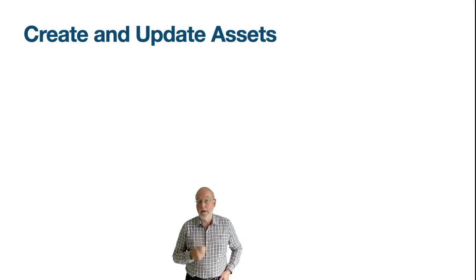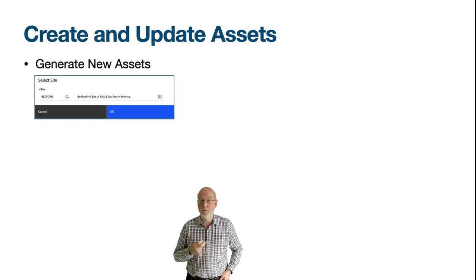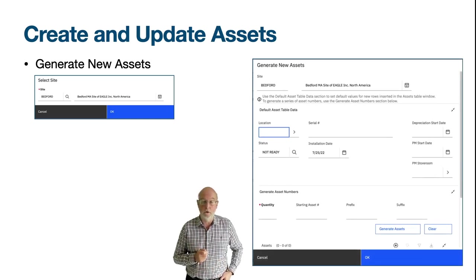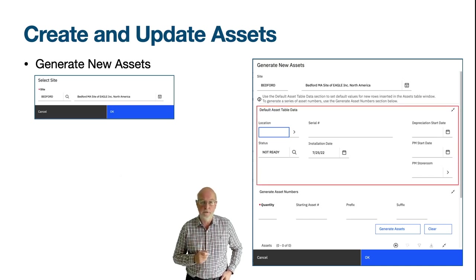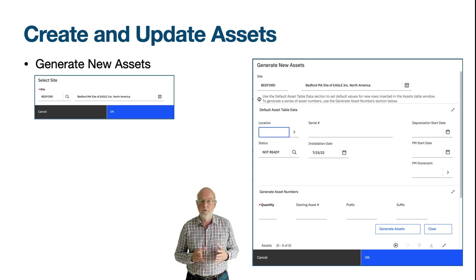Now we'll look at some of the menu actions in the asset templates application, starting with Generate New Assets. When this action is launched, the Select Site dialog opens for you to select a site — the active sites from the organisation on which the asset template is based, such as Eagle NA. On pressing OK, the Generate New Assets dialog opens. At the top is a series of fields acting as default data for the assets you create: you do not need to complete any of this data, they are simply defaults added to the records generated at the bottom of the screen.